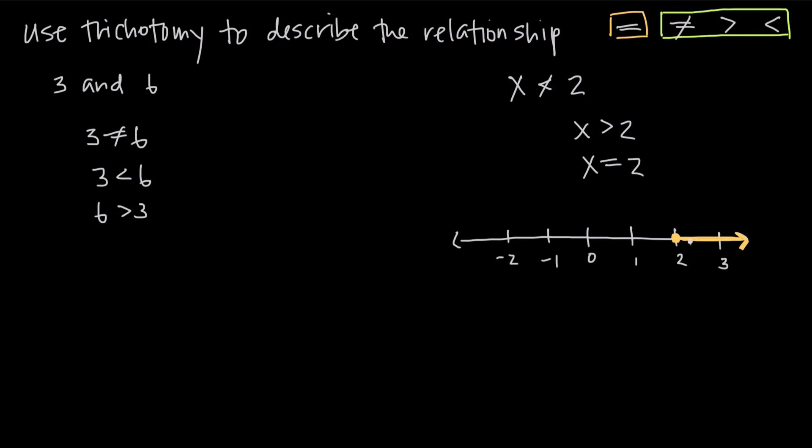So greater than or equal to two are the possible values here for x when we say that x cannot be less than two. And that's just an application of this trichotomy of relationships.